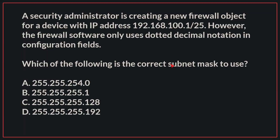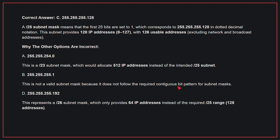A security administrator is creating a new firewall object for a device with IP address 192.168.100.1/25. However, the firewall software only uses dotted decimal notation in configuration fields. Which of the following is the correct subnet mask to use? The correct answer is C: 255.255.255.128. A /25 subnet mask means that the first 25 bits are set to 1, which corresponds to 255.255.255.128 in dotted decimal notation. This subnet provides 128 IP addresses with 126 usable addresses.